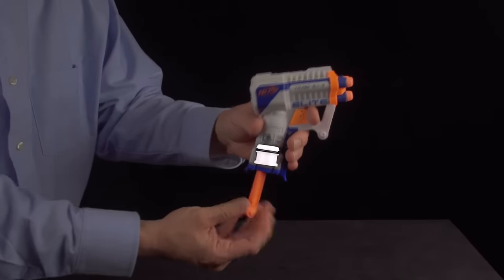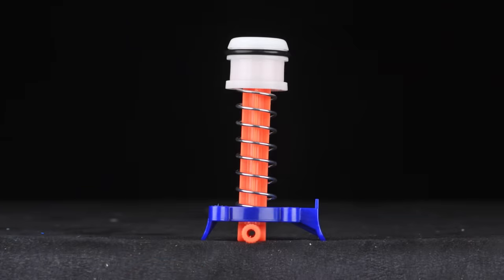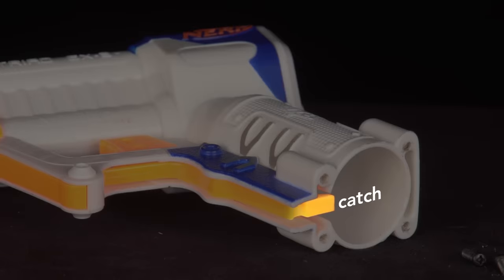When you pull this handle, a plunger moves with it. This compresses a spring between the plunger and the base of the blaster grip. A catch at the base of the grip locks the plunger in place.